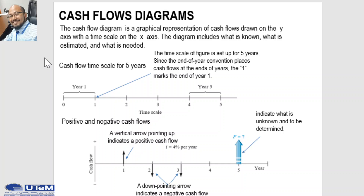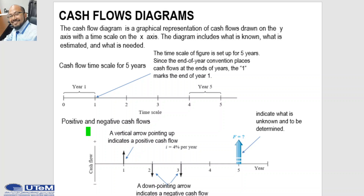The cash flow diagram is a graphical representation of cash flows drawn on the y-axis with a time scale on the x-axis. The diagram includes what is known, what is estimated, and what is needed. This is an example of a time scale from year one to year five. A vertical arrow pointing up indicates a positive cash flow, and a down-pointing arrow indicates a negative cash flow.